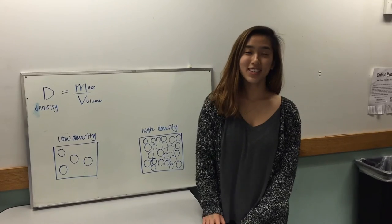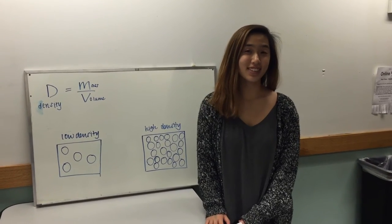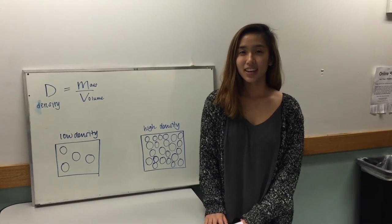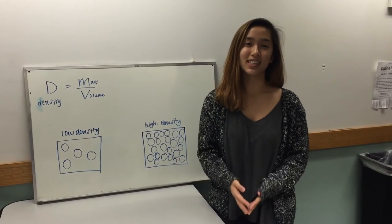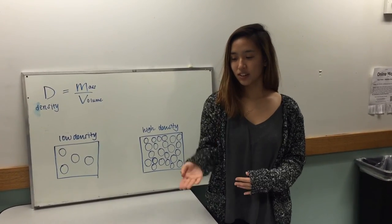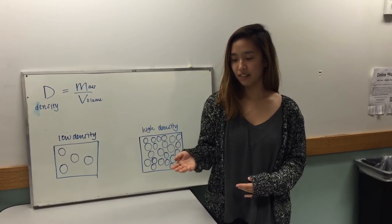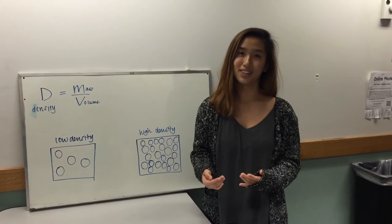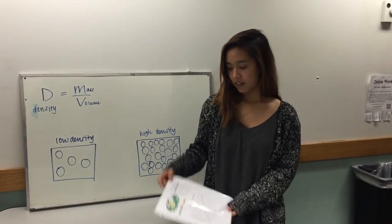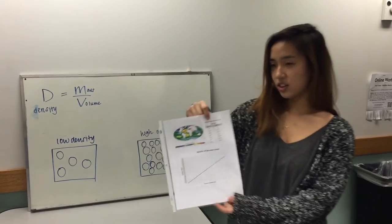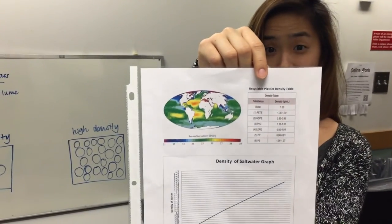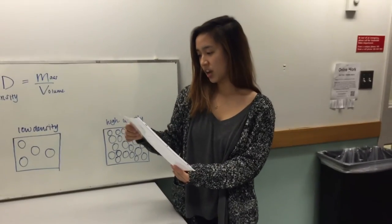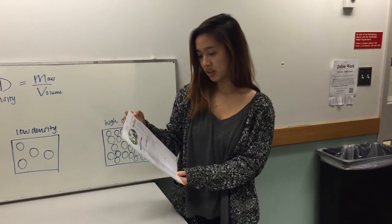After performing the experiment, ask the students if their predictions were correct. The clear beads floated initially because their density is less than 1. Then the blue beads should have started floating after that, and then the yellow beads, in order of their density. If they take a look at their handouts, there should be a table on recyclable plastic densities, which they could use to match up the densities of the beads that were used.